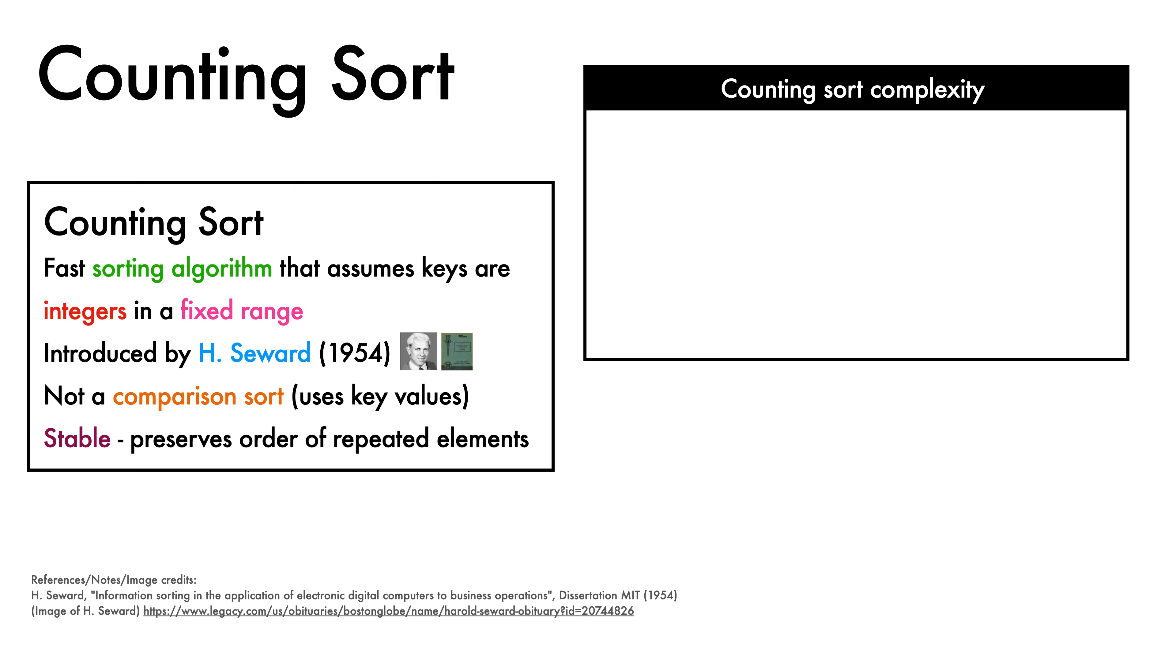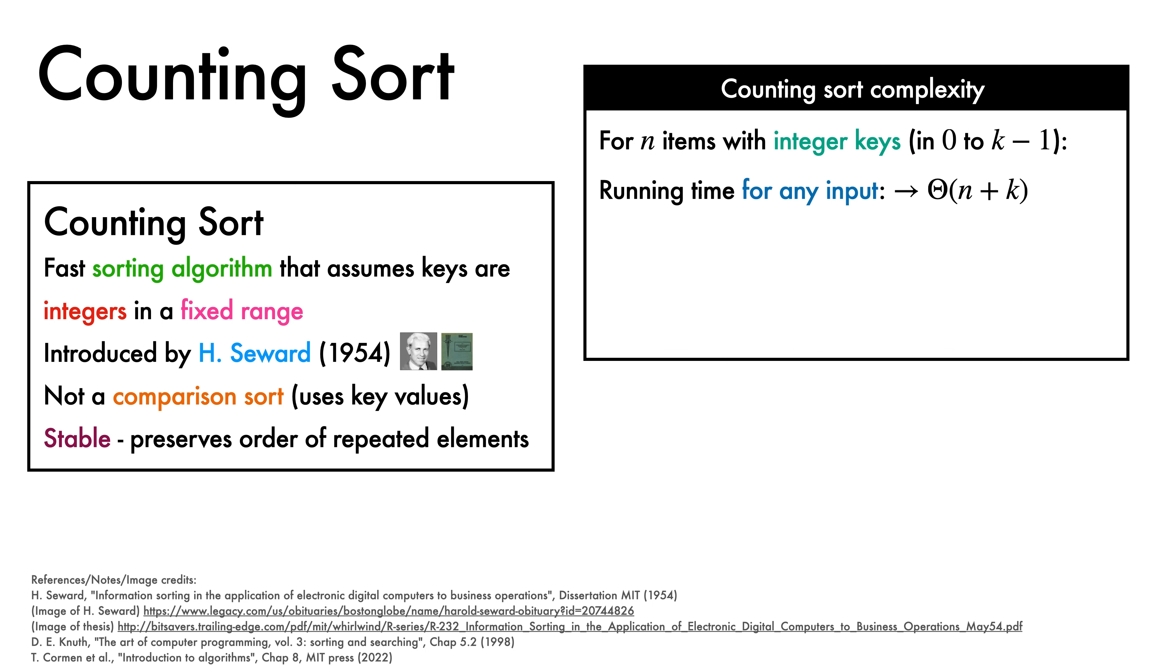When it comes to complexity, in order to sort n items with integer keys that fall in the range between 0 and k-1, the running time for the sort is Big Theta of n plus k. Counting Sort is able to do better than the theoretically optimal Big Omega of n log n lower bound for comparison sorts because it is not a comparison sort.